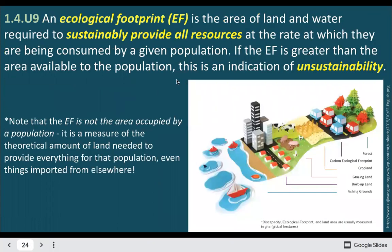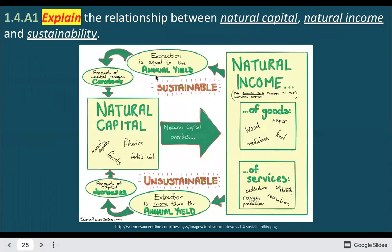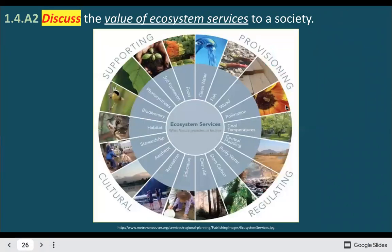Ecological footprints are the amount of land and water used to provide resources for you, and it really depends on your lifestyle — where you live, what foods you eat, how you travel. For example IB-style questions: explain the relationship between natural capital, income, and sustainability. The capital provides the income, and if you go above that annual yield you'll be unsustainable. To stay sustainable, you want to keep your extraction equal to or less than the annual yield.